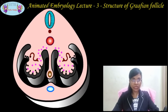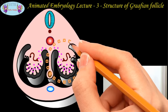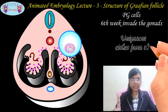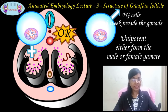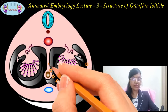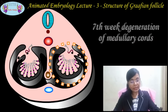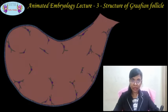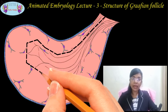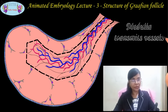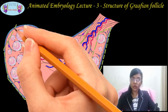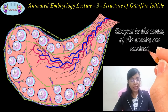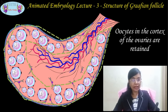In the last session we saw that by the sixth week, the PG cells invade the gonads. These PG cells are unipotent cells because they will either give rise to a female gamete or a male gamete, depending upon the sex of the embryo. By the seventh week, we can appreciate the degenerating medullary cords in the gonads of the female embryo. Thereafter, the medullary region is filled with connective tissue and transmits the vessels and nerves necessary for the developing oocyte. Only the oocytes present over the cortex of the ovary are retained. This process is very much necessary for the easy release of the ovum during ovulation.